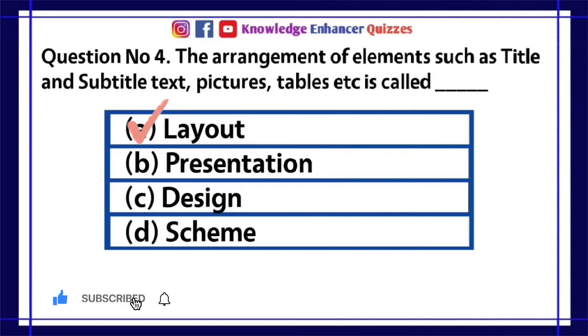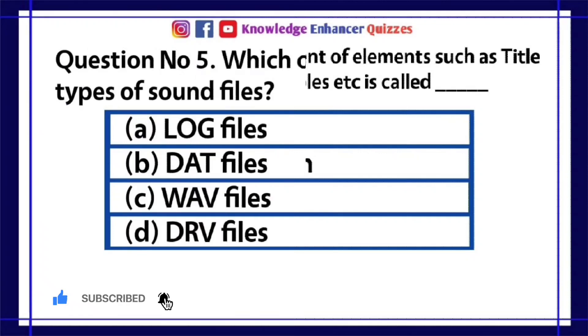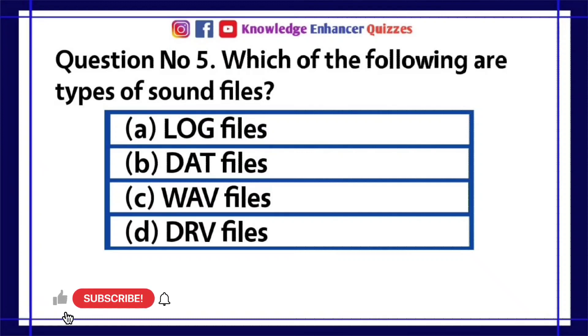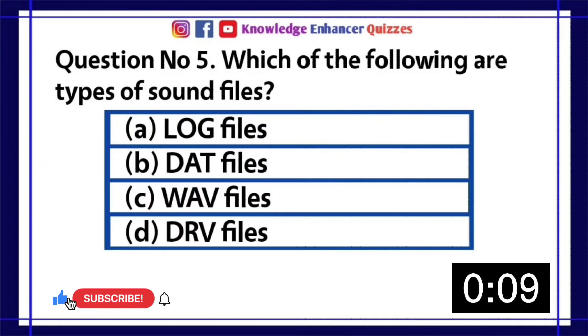Option A is the right answer. Question number 5. Which of the following are types of sound files? A. Log files, B. Dat files, C. Wave files, D. Drv files.